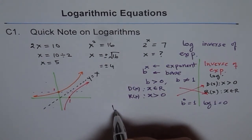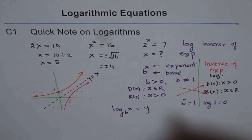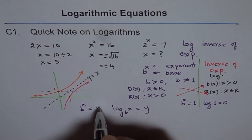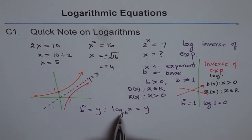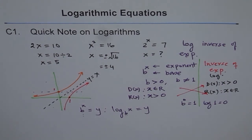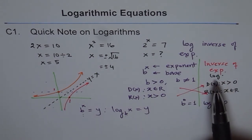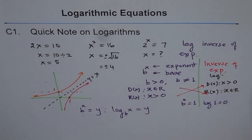In general, we write the log function as log base b of x equals y, where y is always the output. And the exponential function as b to the power of x equals y. Notice that in both, the base b is the same — that is the key correlation between the two forms.